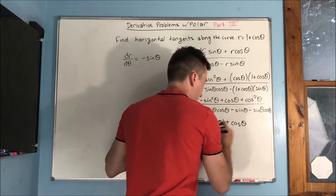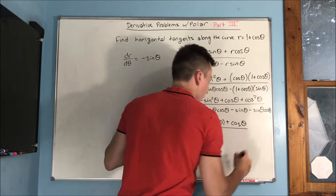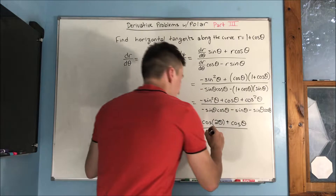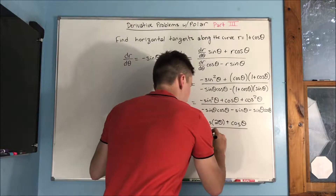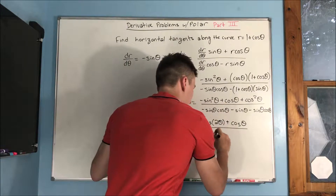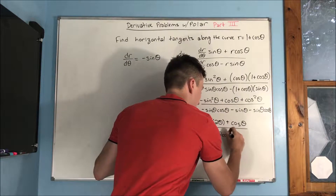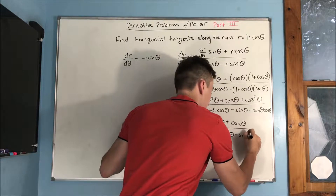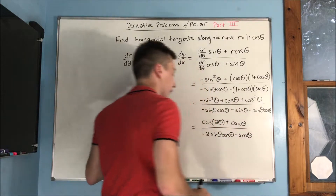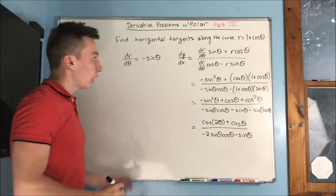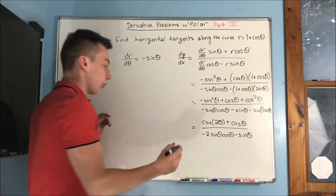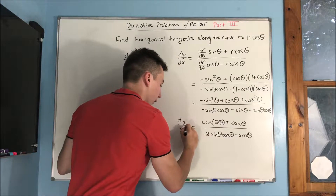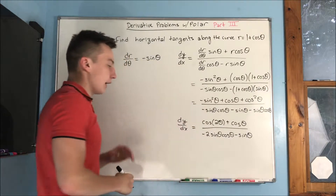So we can write the numerator as cosine of two theta plus cosine theta, all over negative two sine theta cosine theta minus sine theta. That is our derivative dy/dx.